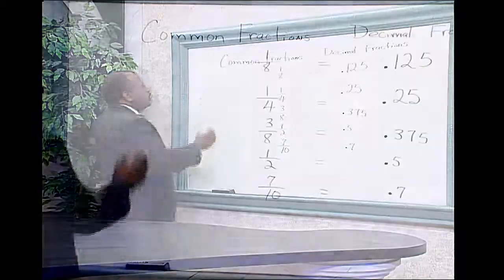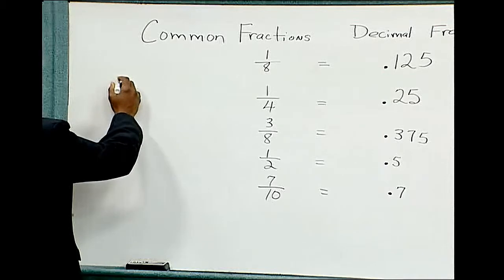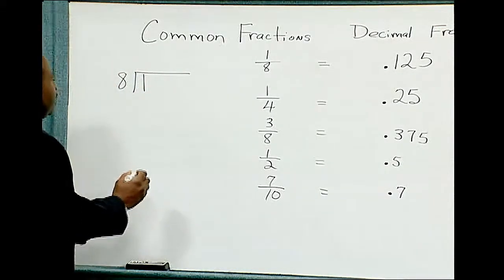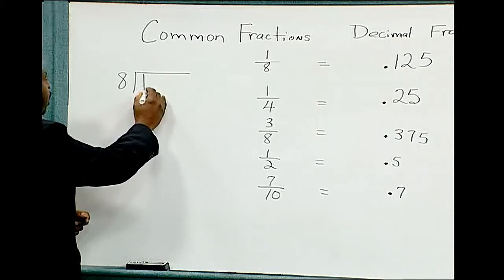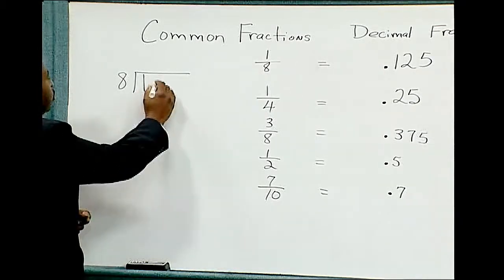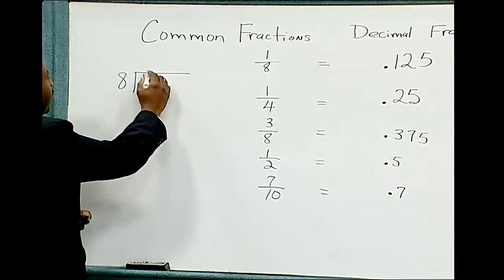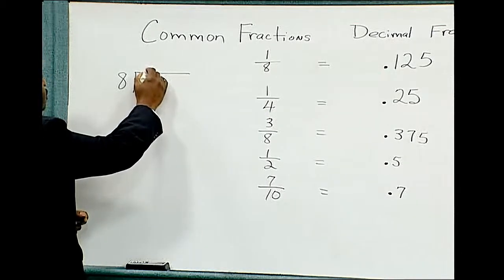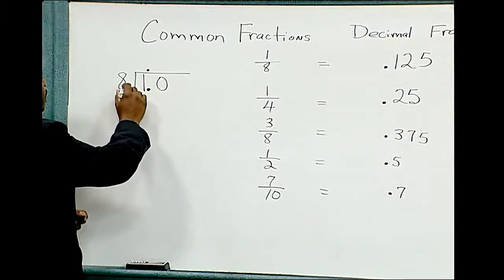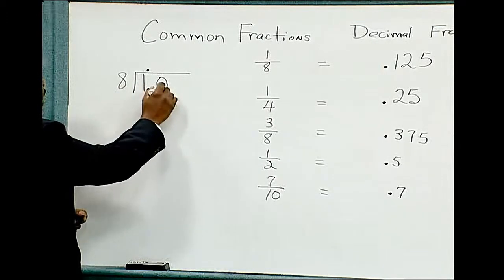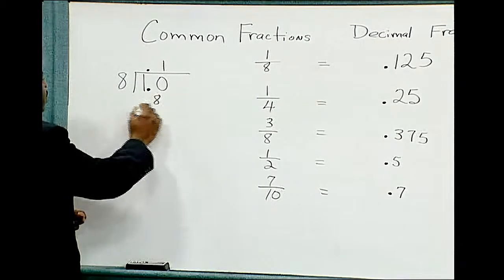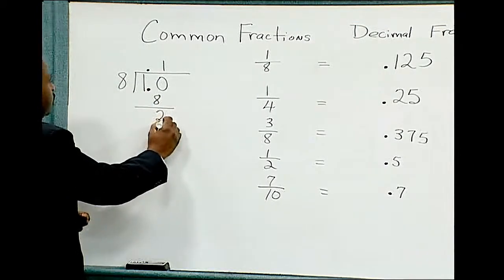Now I'm going to review how to change 1/8 into a decimal fraction. In order to change 1/8 to a decimal fraction, we divide 8 into 1. Remember that we have to place a decimal point behind the 1 and also add a 0. Take the decimal point straight up in your answer above the decimal point that is in the problem. 8 will divide into 10 one time. One times 8 is 8. 8 from 10 leaves 2.